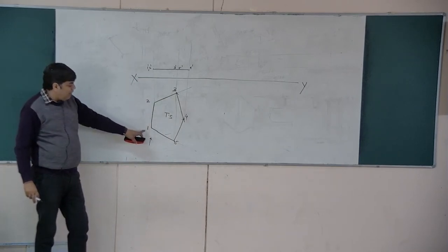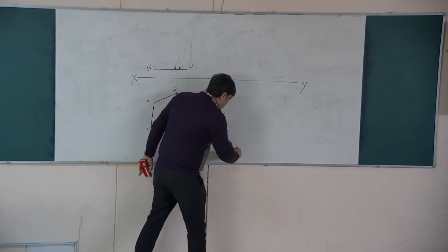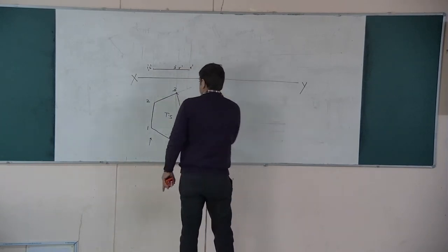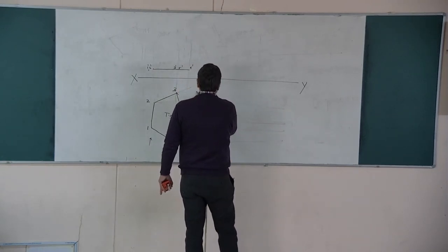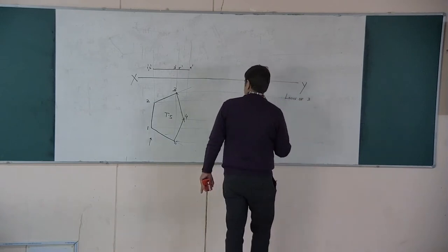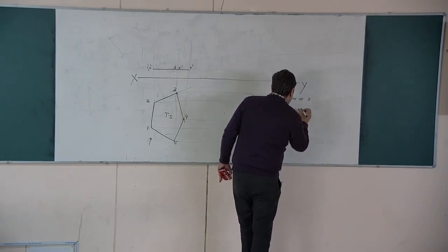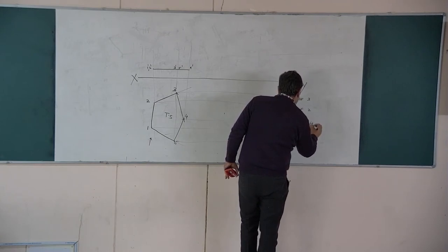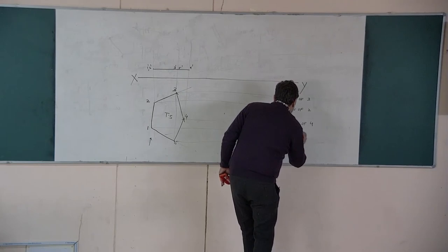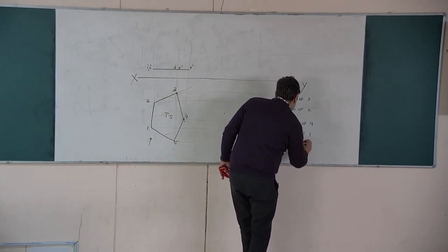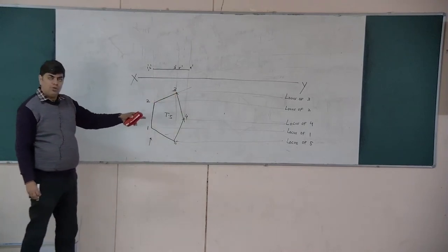Now I will draw the locus. This will be the locus of vertex 5, locus of 1, locus of 4, locus of 2, and so on - locus of 1, 2, 3, 4, and 5. Each vertex has its own horizontal locus line drawn from the front view.